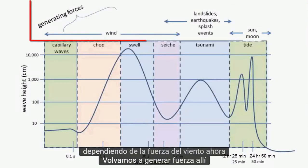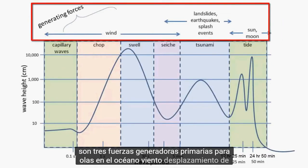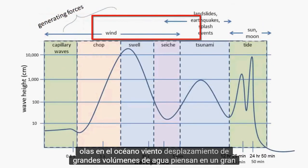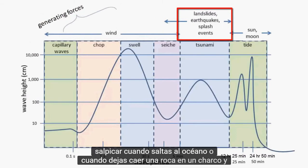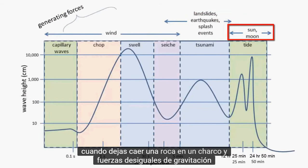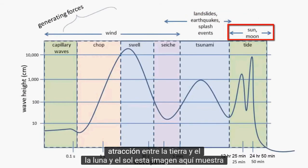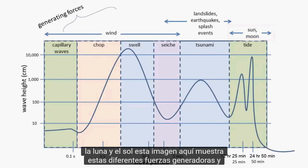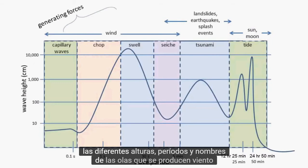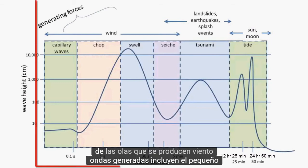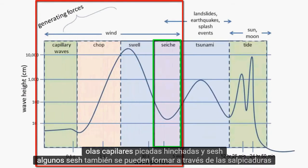Now let's return to generating force. There are three primary generating forces for waves in the ocean: wind; displacement of large volumes of water — think of a large splash when you jump in the ocean or when you drop a rock in a puddle; and uneven forces of gravitational attraction between the Earth and the Moon and the Sun. This image shows these different generating forces and the different heights, periods, and names of the waves that are produced. Wind-generated waves include the tiny capillary waves, chop, swell, and seiche.